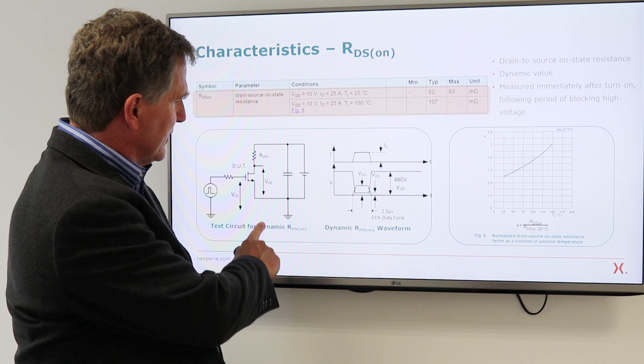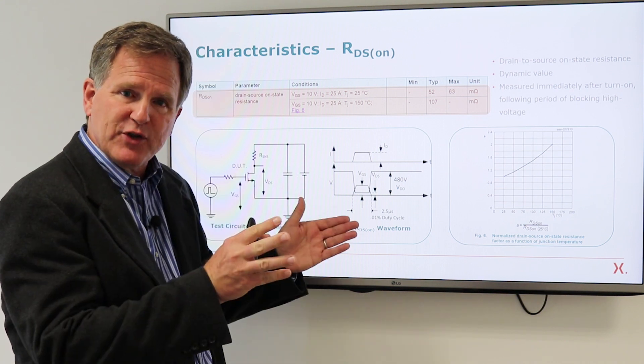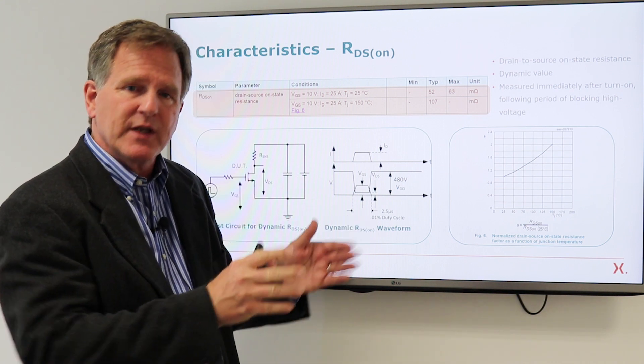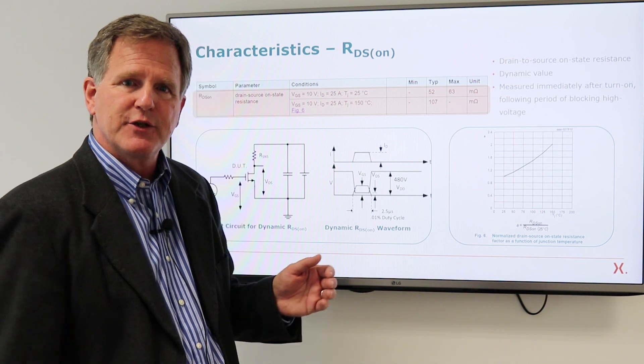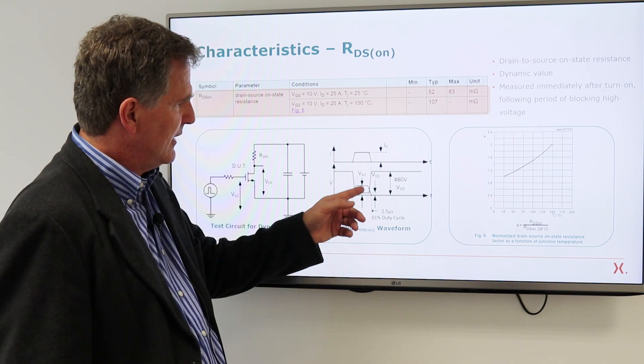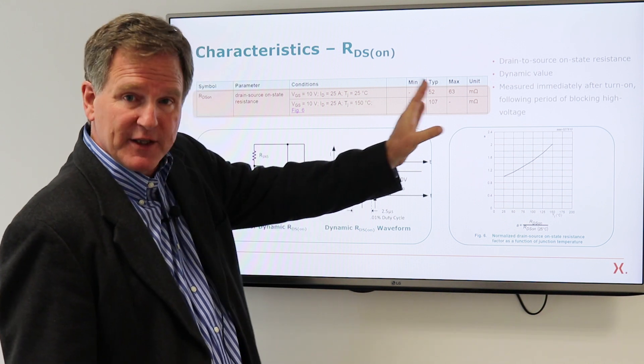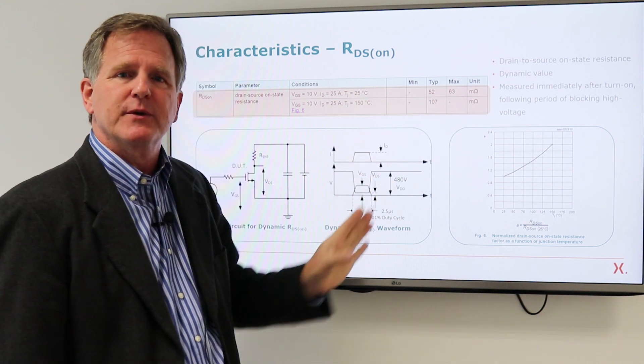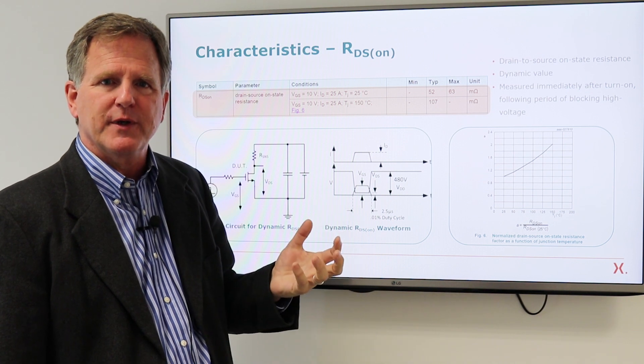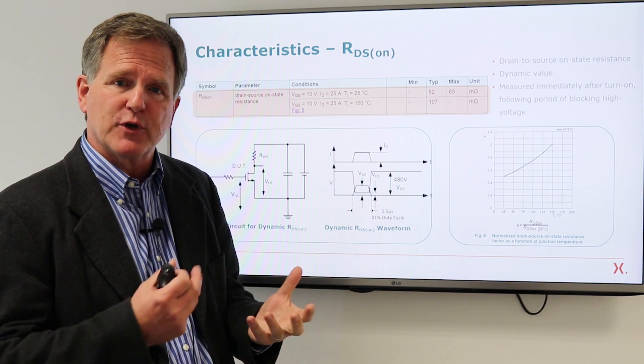And when we test it, we use a circuit like this, where we have it off for an extended period, turn it on and immediately measure the drain to source voltage. And from that calculate the on resistance. So that's how we test it. That's what we guarantee. The reason for doing this is GAN has a well-known capability of trapping charge.